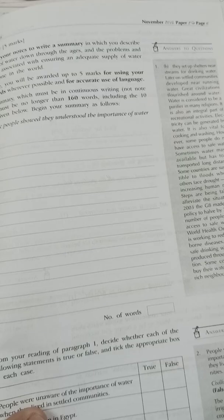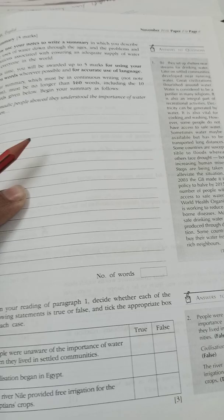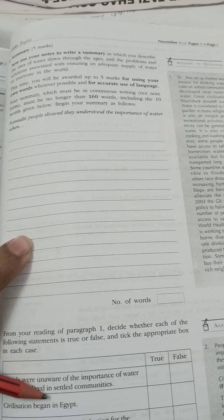Now use your notes to write a summary in which you describe the uses of water down through the ages and the problems and solutions associated with ensuring an adequate supply of water to everyone in the world.